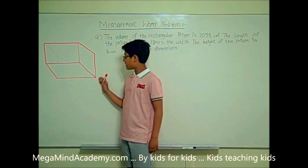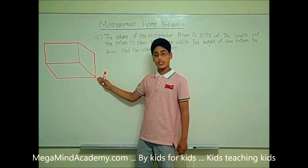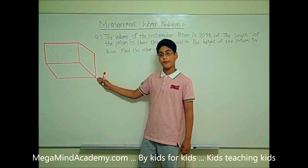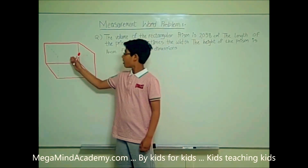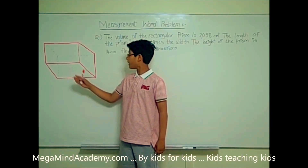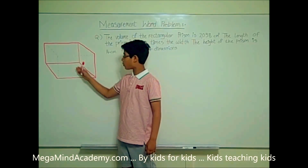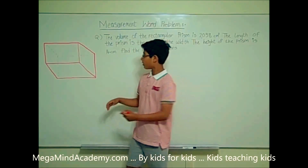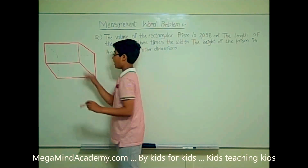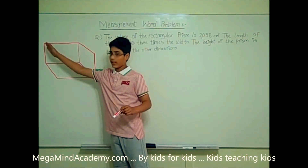Now, this is a rectangular prism. It is a 3D figure which has two rectangular bases, one on the top and one on the bottom, which is the dotted line and this rectangle.